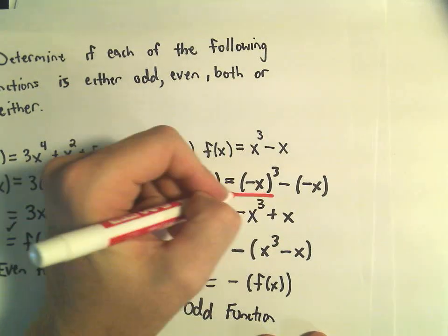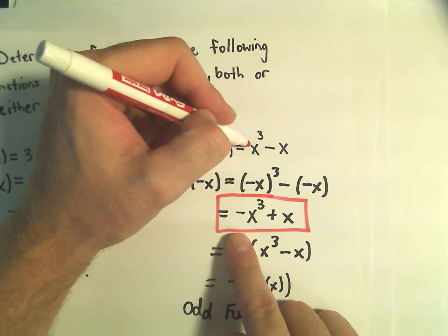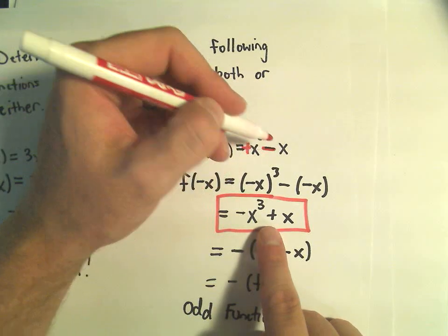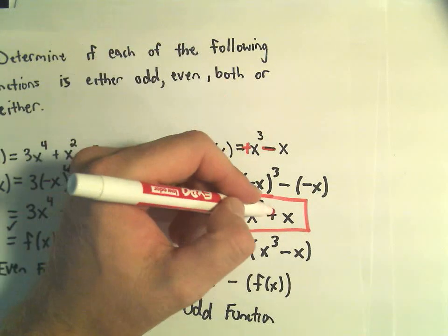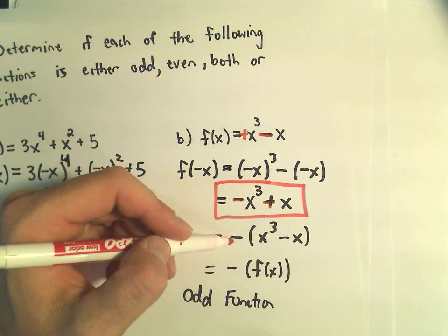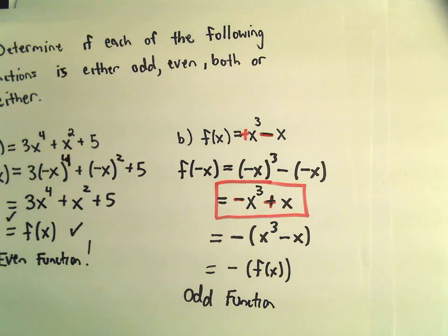Honestly, I stop at this step right here. If you look at the signs on the original, notice the original x cubed is positive and now it's negative. The original next sign was a negative. Now it's a positive. If all the signs flip-flop, you can basically do this step of factoring the negative out. But if you recognize that all the signs have just switched, that's going to imply that it's an odd function.